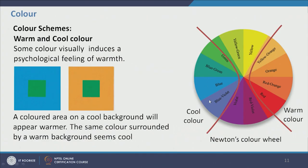If we divide colors into warm and cool depending on the sensation they evoke, warm colors — red, orange, and yellow on the right side of the color wheel — evoke a sensation of warmth. Blue, green, and blue-violet evoke a sensation of coolness and are called cool colors. Interestingly, one particular color surrounded by a warm color appears cooler, and the same color surrounded by a cool color appears warmer — two identical greens can appear different depending on their surrounding colors.